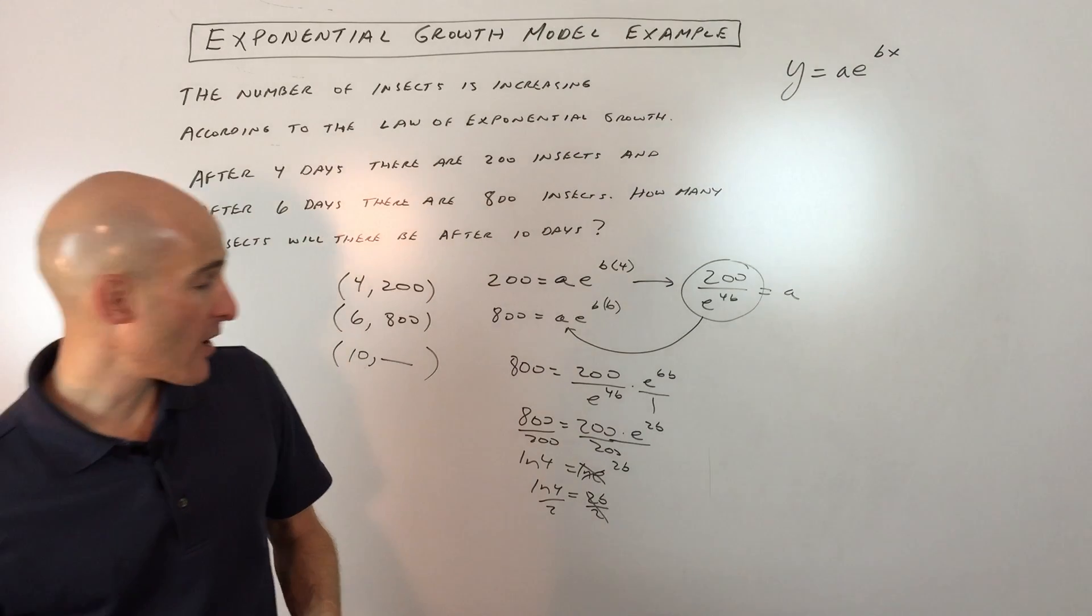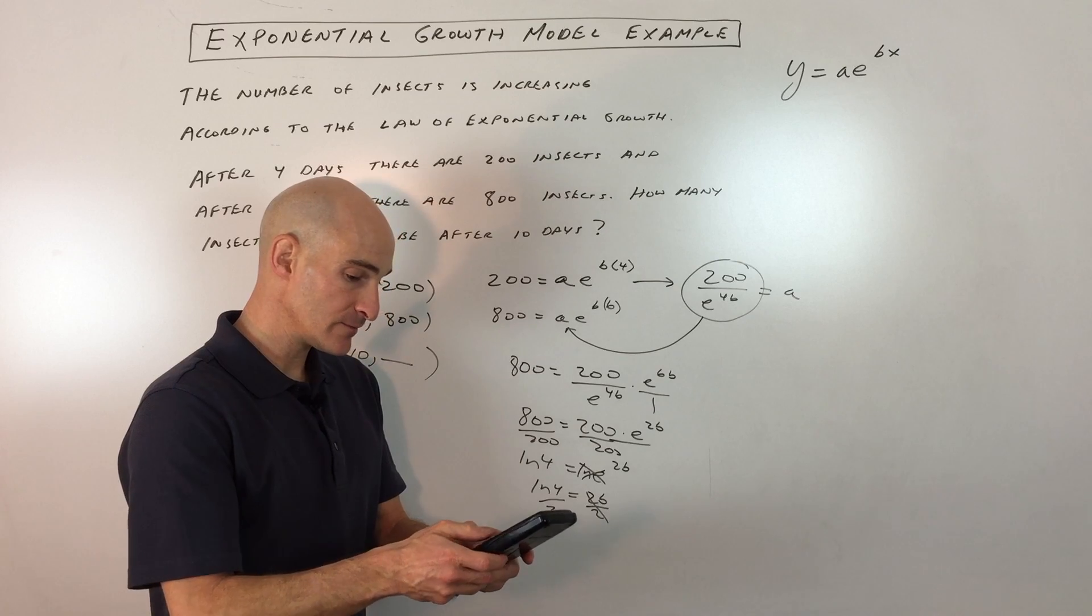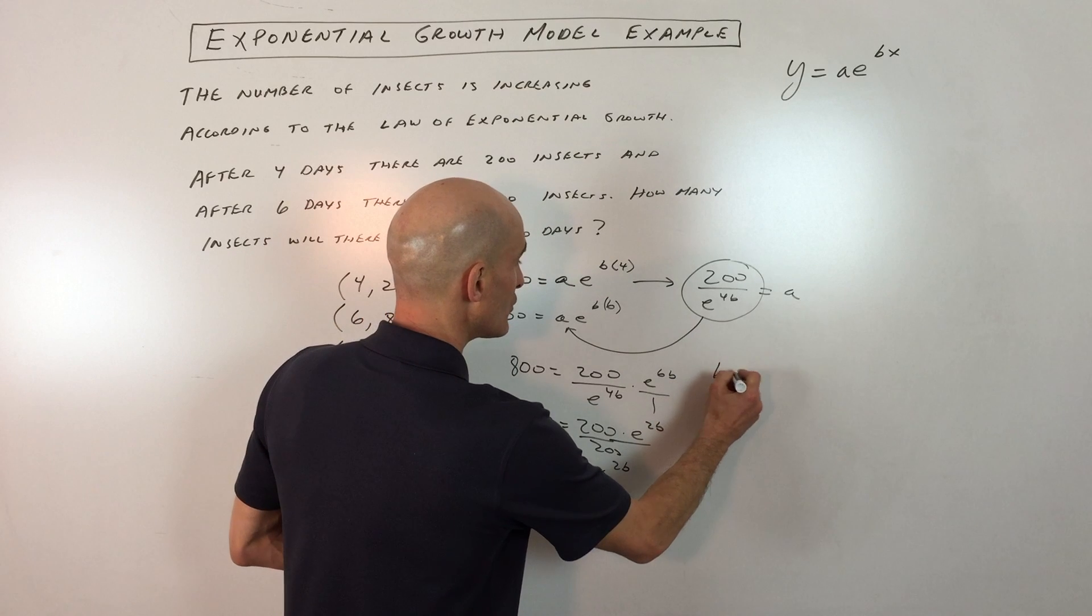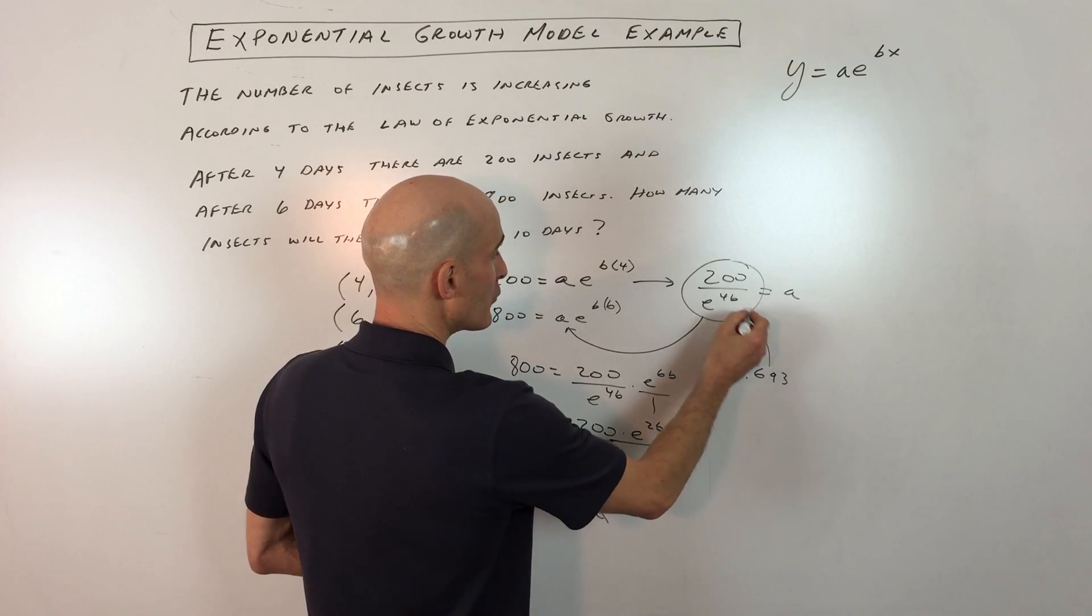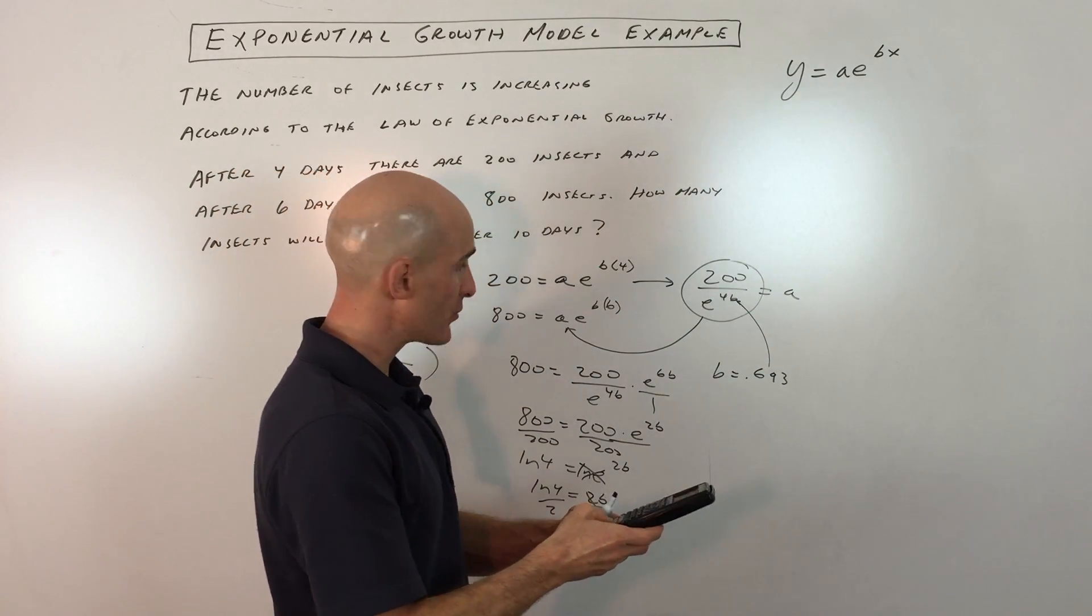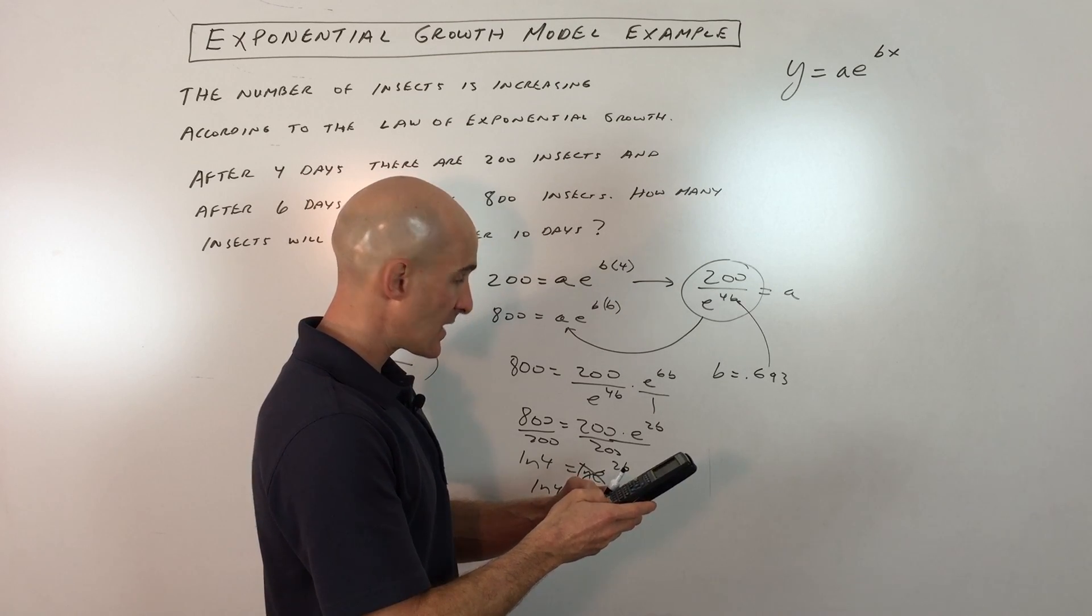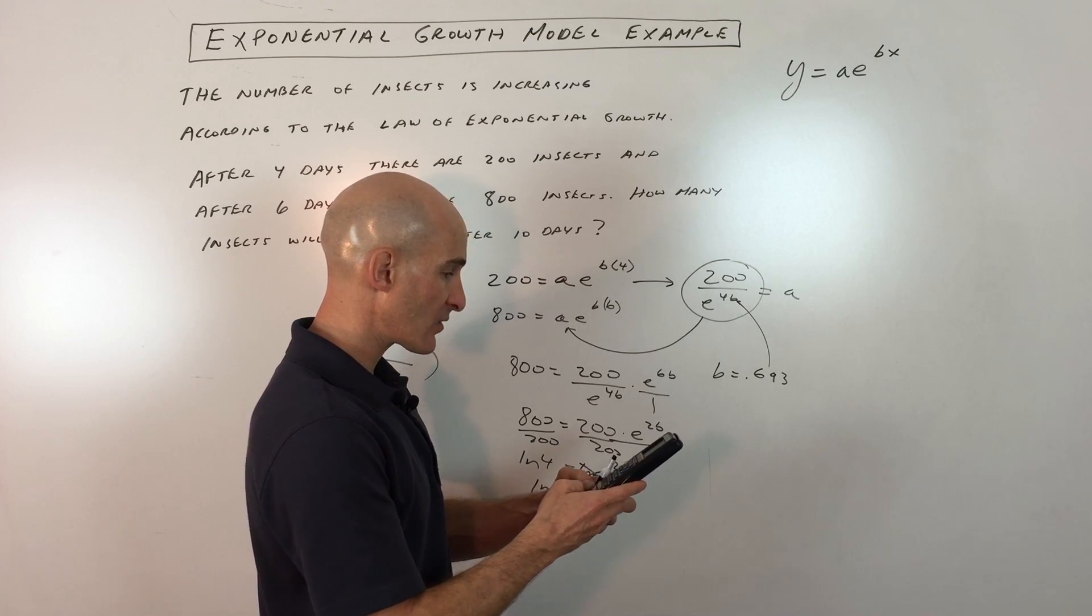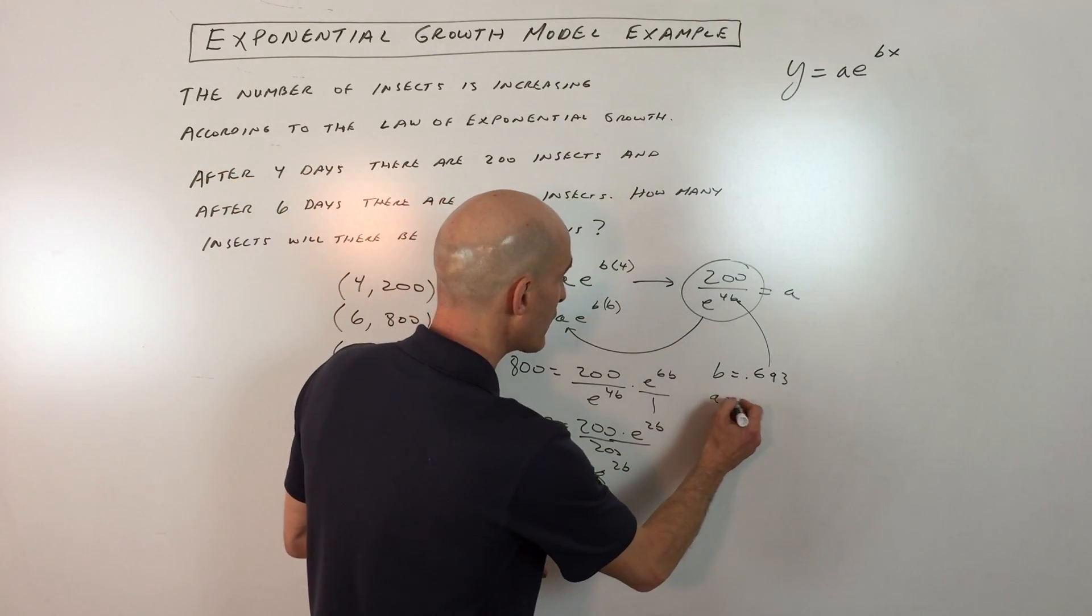We'll get a decimal approximation: natural log of 4 divided by 2 is 0.693. So b equals 0.693. Now if we put that b value back in, we can solve for a. We've got 200 divided by e to the 0.693. That comes out to 12.5. So our a value is 12.5.